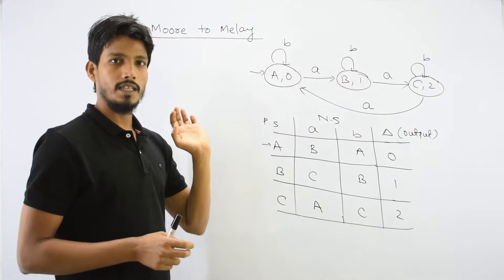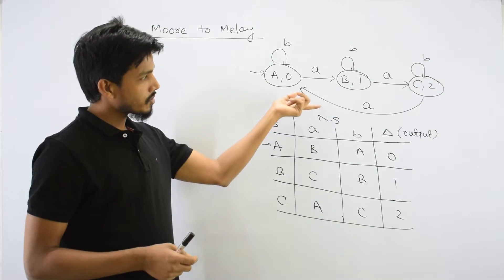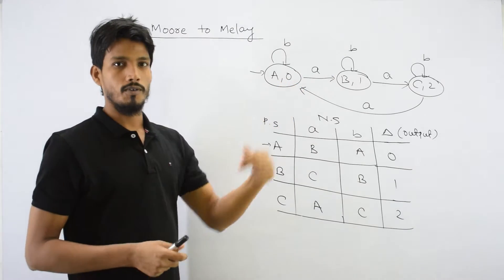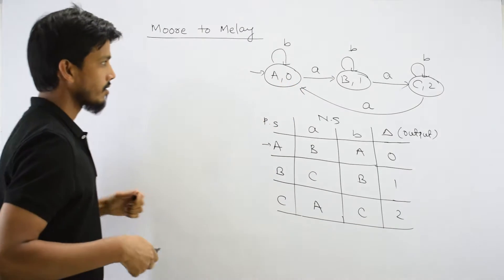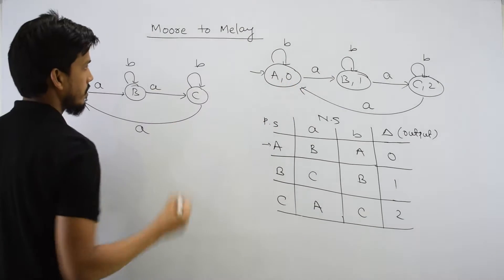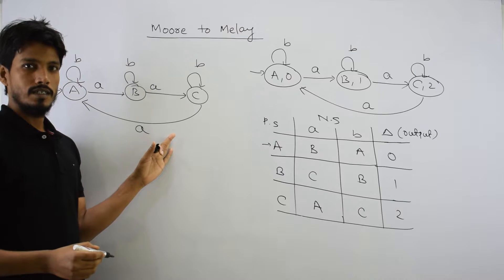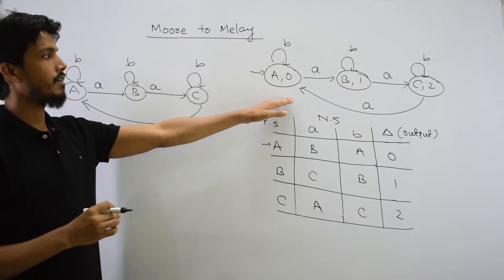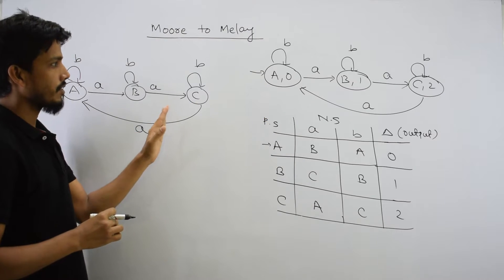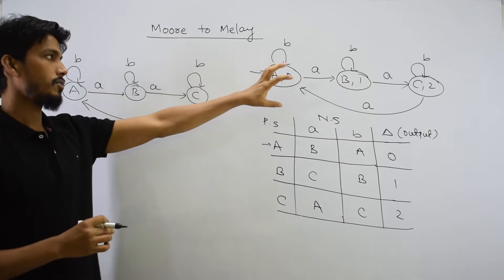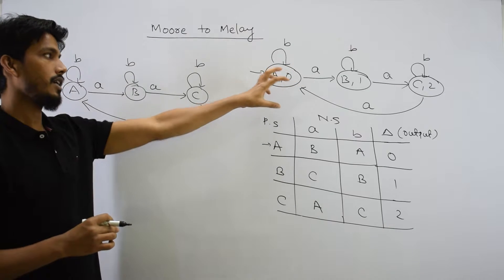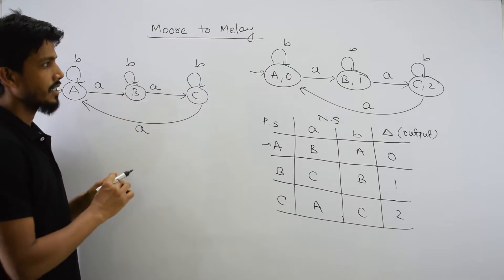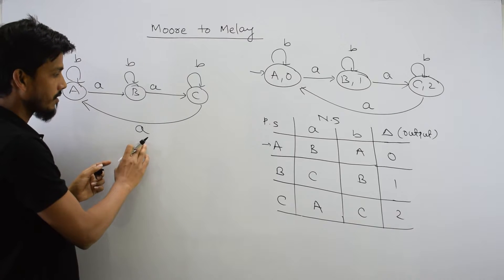What do we do with the Mealy machine? The Mealy machine is designed as follows: the diagram is copied as it is, and we will just remove the output from the states. So we remove the state output. This is the state-transition diagram converted to a Mealy machine — the state and transitions are copied, only the output is moved.